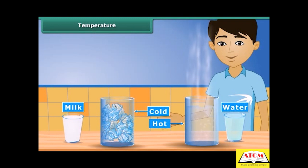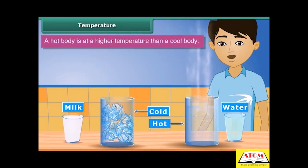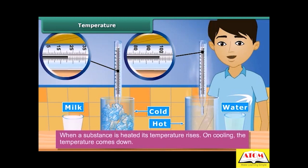How much cold is the water? Is it cooler than ice? How much hot is the milk? Is it hotter than boiling water? Obviously, for this we need a measure to know about the coldness and hotness of a body. A hot body is at a higher temperature than a cool body. When a substance is heated, its temperature rises; on cooling, the temperature comes down. The degree of hotness or coldness in a body is described as its temperature.